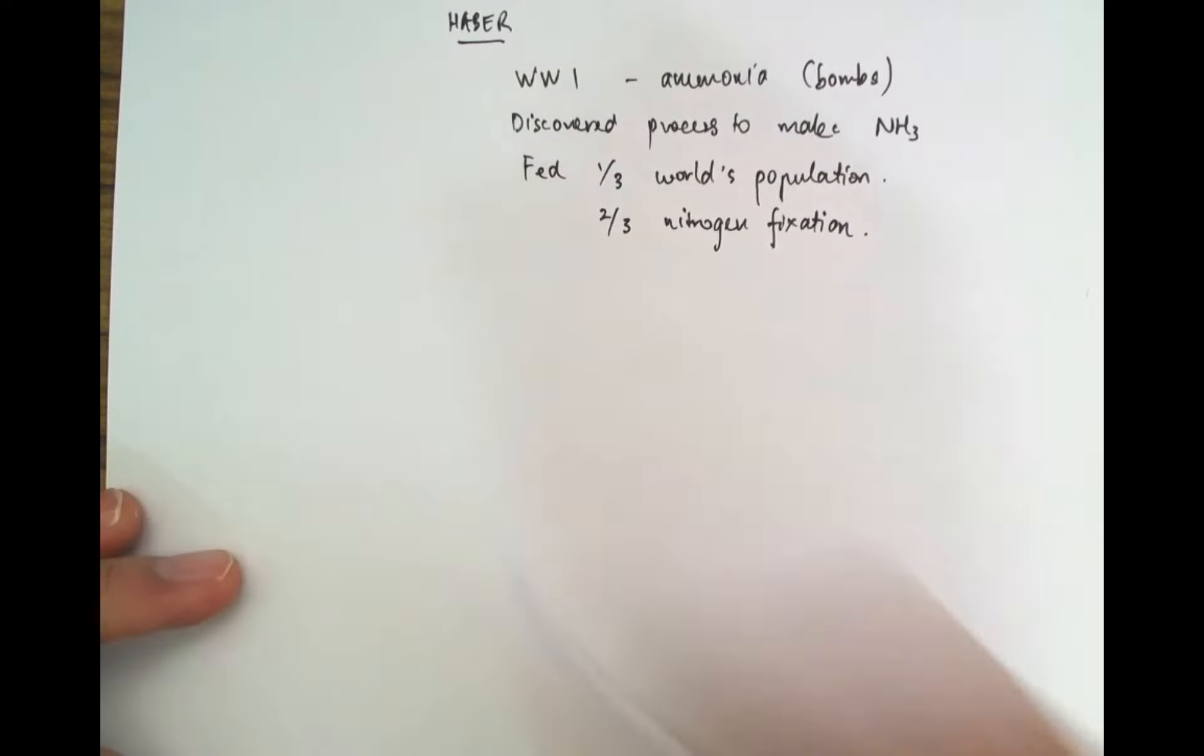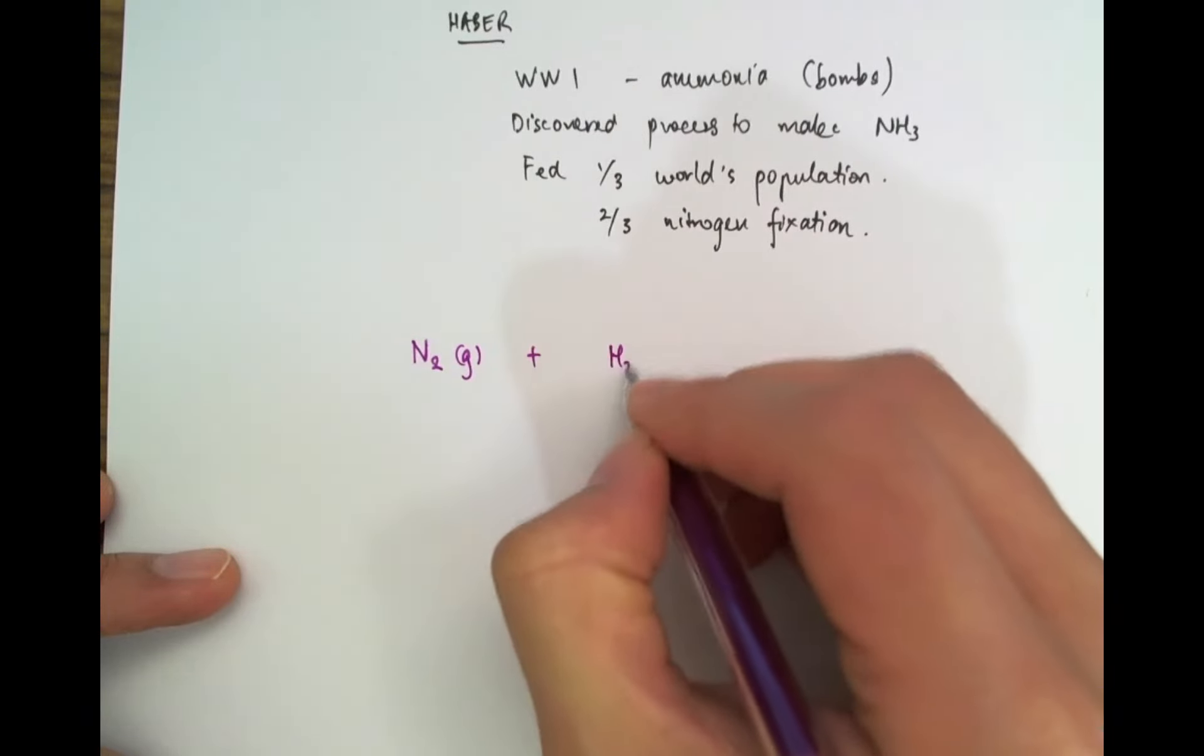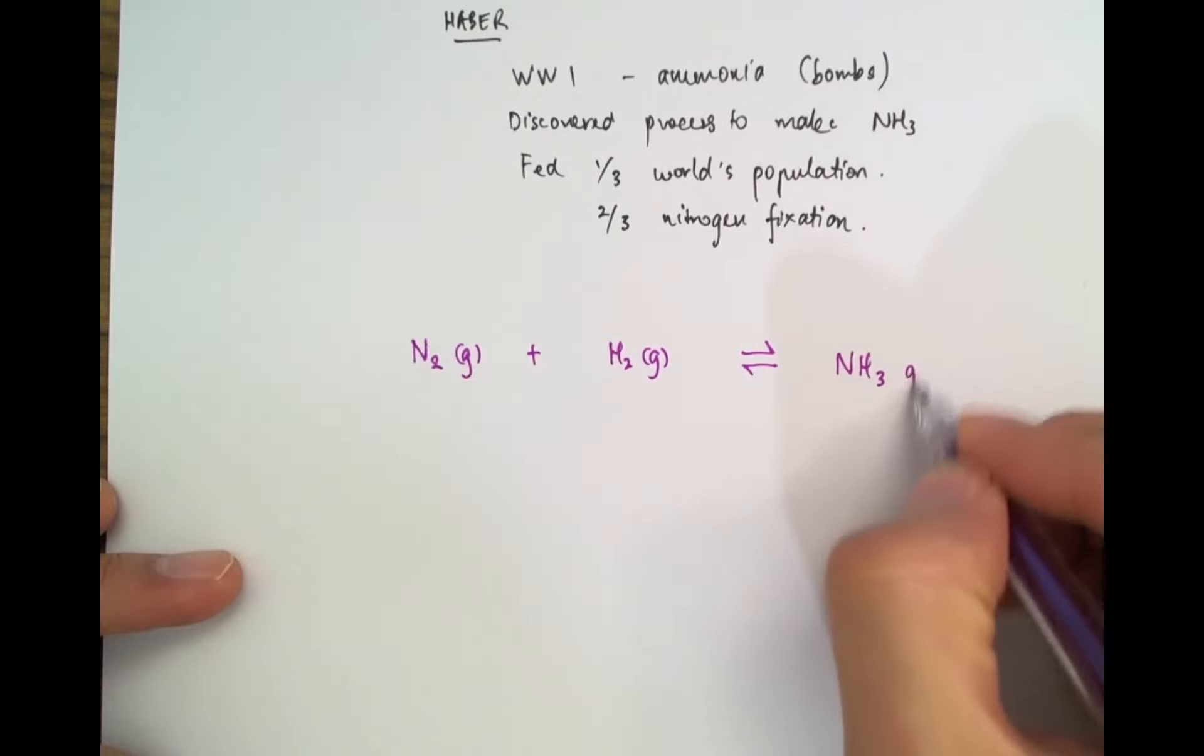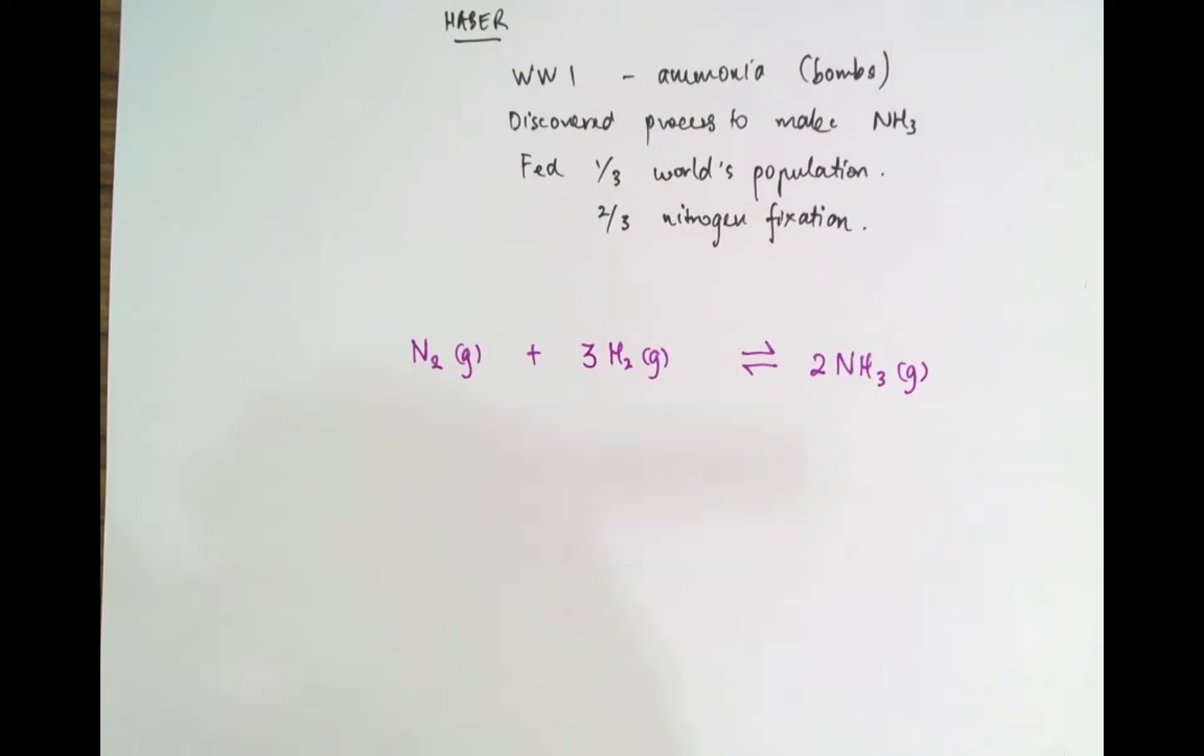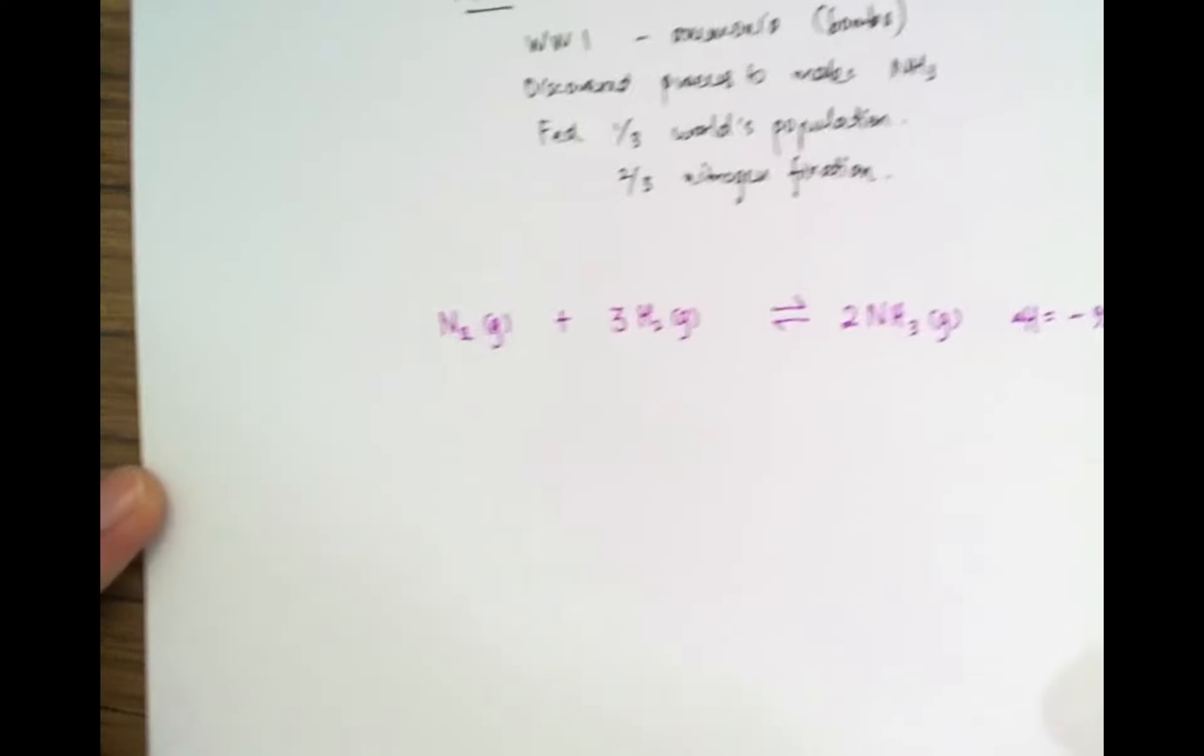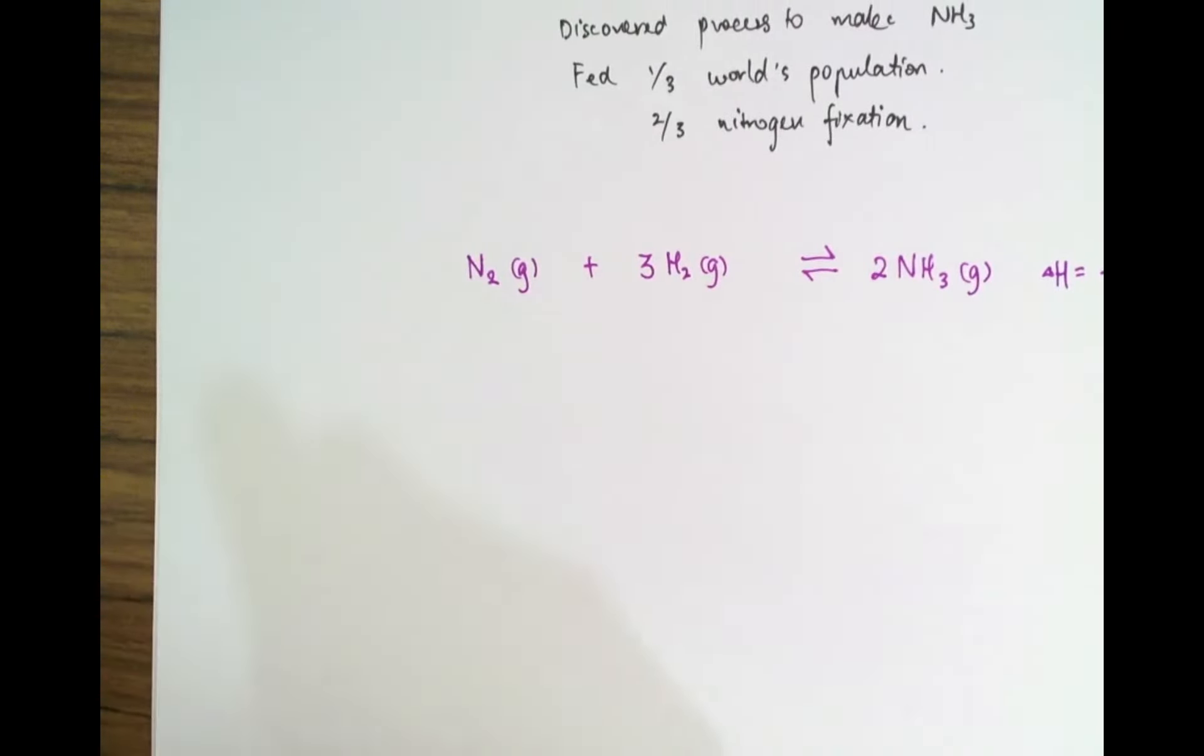Anyway let's get to the actual process itself. So here's the equation for the Haber process. I'm going to take nitrogen gas and react it with hydrogen gas in a reversible reaction to form ammonia gas. So I'm just going to balance this: N₂ + 3H₂ ⇌ 2NH₃ for this reaction to occur.